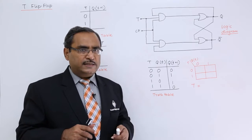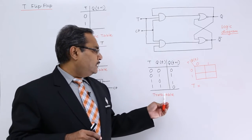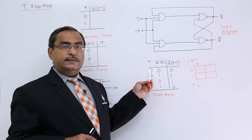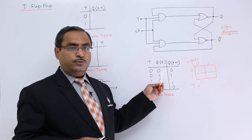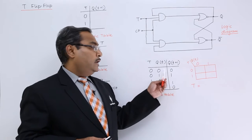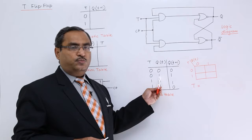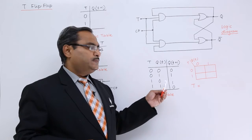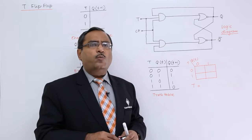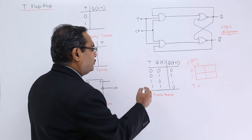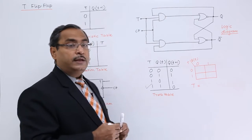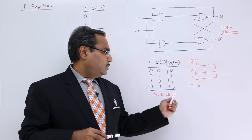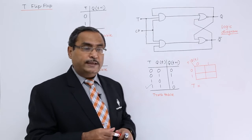Now let us go for further explanation. This is the truth table of T flip-flop. If the present input is 0 and previous output is 0, the next output will be 0. If the present input is 0 and previous output is 1, the next output will be 1. In this way we can read this respective truth table. Let us test one of the combinations: present input is 1, previous output is 1, and the next output will be 0 in that case.